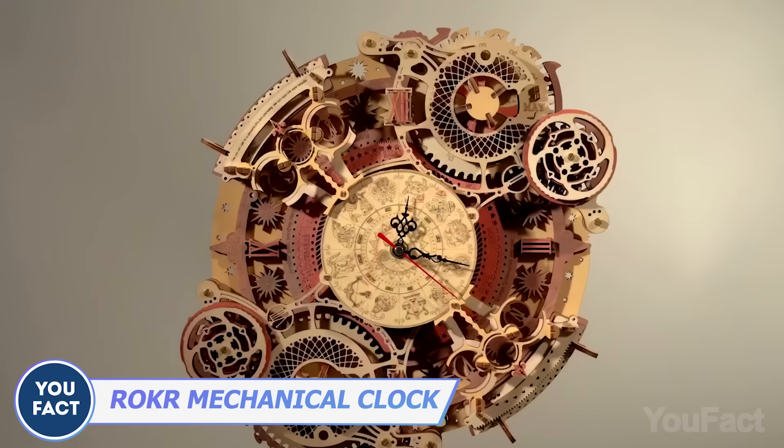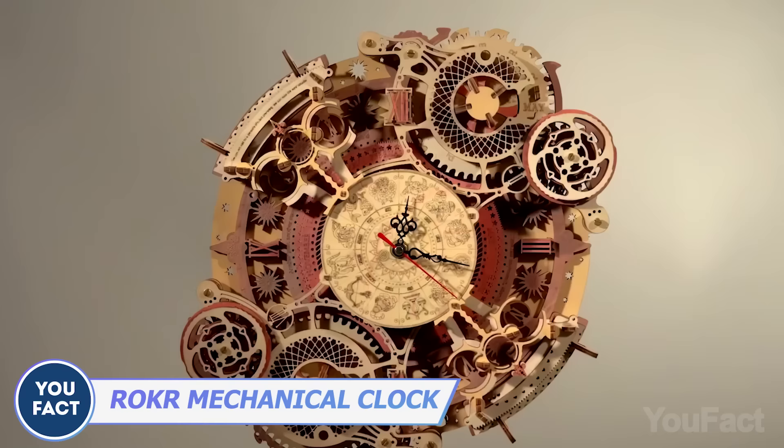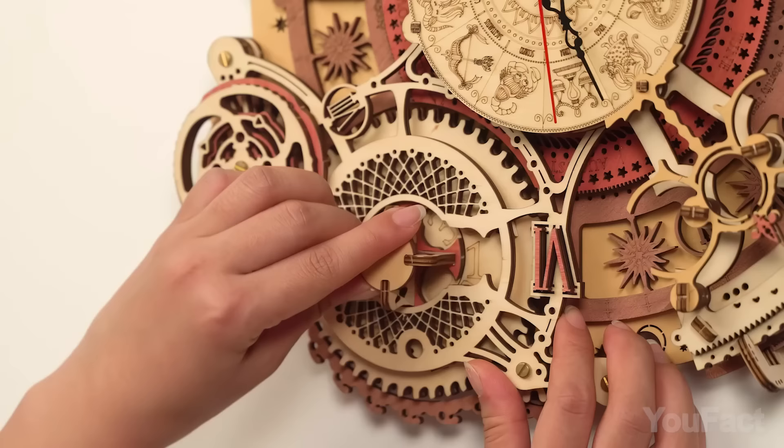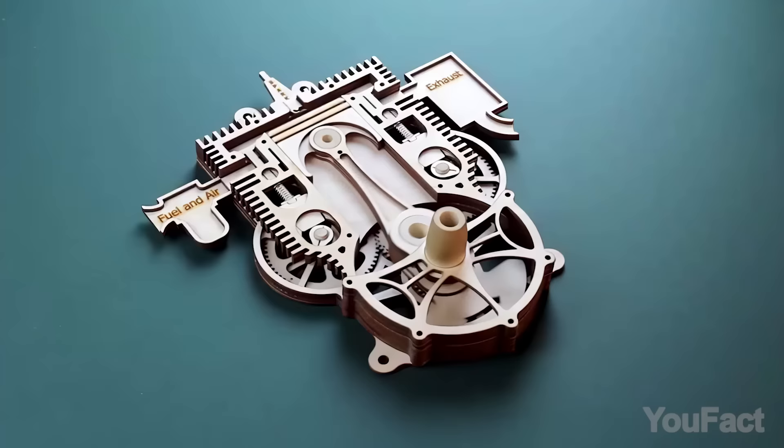You want something functional? Maybe you need a clock. This one features a combo of a zodiac dial and Roman art calendar with manual adjustments for the month, week, and date.